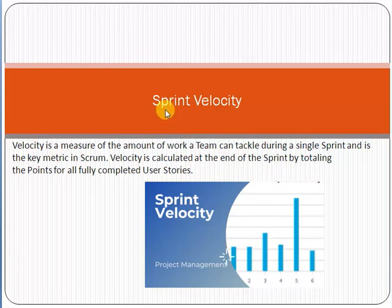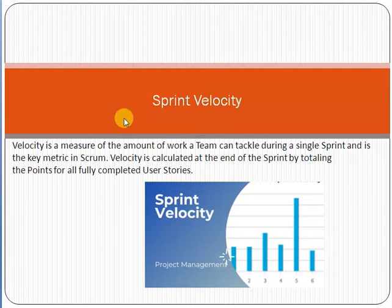A sprint is a three to four week time period in which we decide the deliverables to be delivered to the customer. This is the main concept of a sprint. Now, what is sprint velocity? Velocity is a measure of the amount of work a team can tackle during a single sprint.